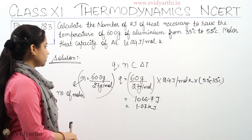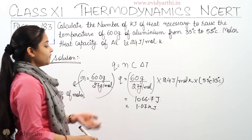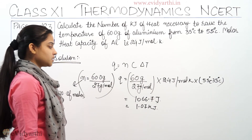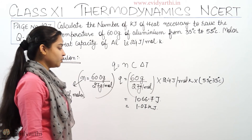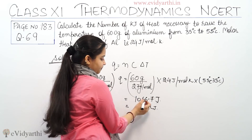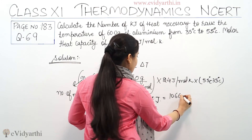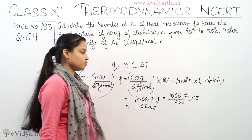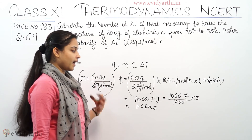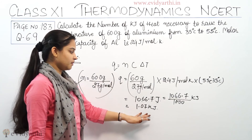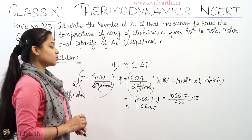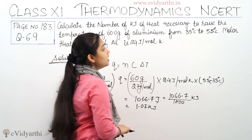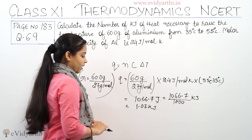So the answer is 1.07 kilojoule. I converted the answer into kilojoule because the question asks to calculate the heat in kilojoules. The answer in joules is 1066.7 J, and dividing by 1000 gives 1.07 kilojoule. So 1.07 kilojoule of heat was necessary to raise the temperature of 60 grams of aluminium from 35 degrees Celsius to 55 degrees Celsius. This is the heat required for the process.